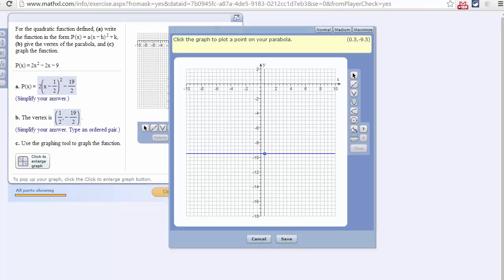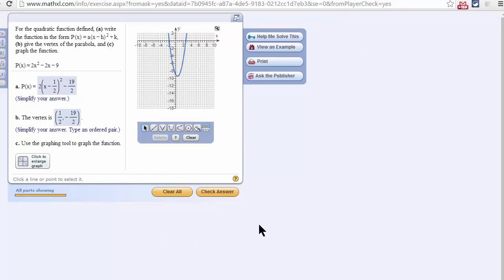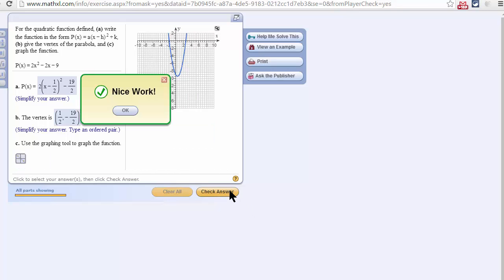Then, any other point on the parabola. Well, let's see. If x is 0, y is negative 9. So I can very easily graph this and save it and check my answer. Woo!